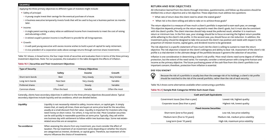Inflation is one consideration in determining a client's risk profile. Most retail clients need some degree of inflation protection, but the extent of the need varies. For example, a retired person with a long time horizon and income as the primary objective must consider the future purchasing power of the cash flow from the portfolio — protection from inflation is essential. Because the risk of a portfolio is usually less than the average risk of its holdings, a client's risk profile should be matched to the risk of the overall portfolio rather than the risk of each individual security.